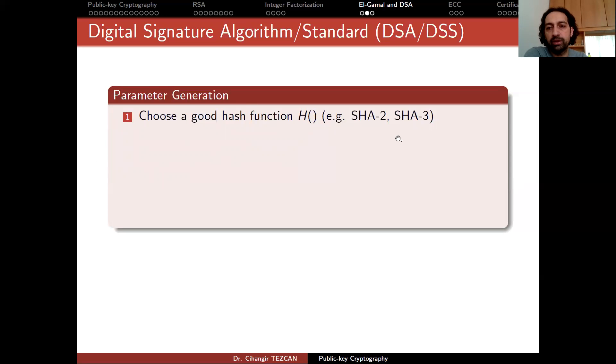You should at least choose SHA-2 or SHA-3. Using MD5 or SHA-1 would not work. Choose key lengths L and N. In this case, L can be chosen as 3072 bits and N can be chosen as 256 bits. These numbers would be enough for you to get 128 bit security.